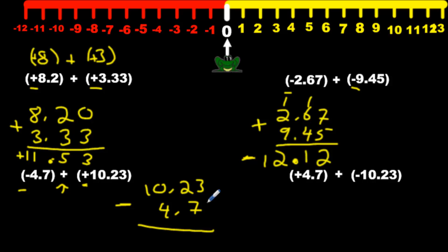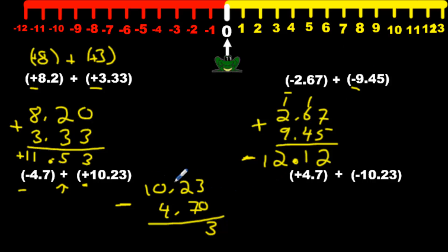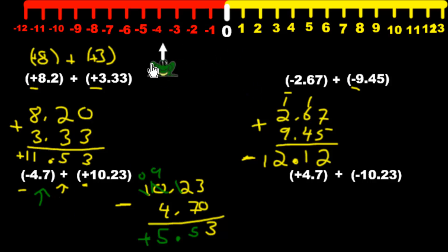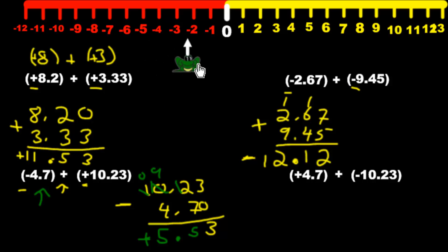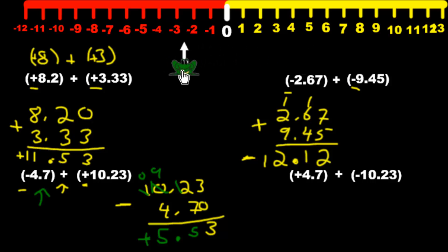We're going to put a 0 here: 3 take away 0 is 3; 2 take away 7 can't do it, so we have to borrow — 10 becomes 9, this becomes 12, take away 7 is 5; this is also 5. Now look at the numbers again: 4 versus 10, ignoring the signs — 10 is bigger. Look at the sign: positive. It moves on. If we start here at negative 4.7 and add 10 positives, that's going to overwhelm the negatives and the answer is going to be positive because there are so many positives being added in — so we're going to be getting a positive answer.